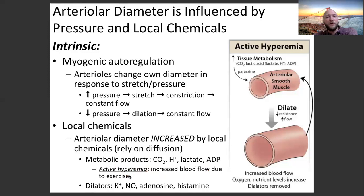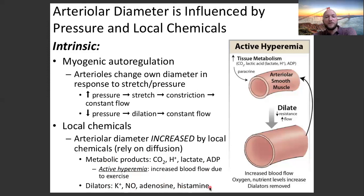Other non-metabolic products that are dilators include potassium, nitric oxide, adenosine, and histamine. We see histamine utilized by white blood cells to dilate blood vessels and increase blood flow to certain areas.